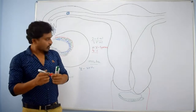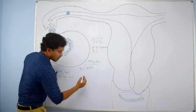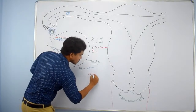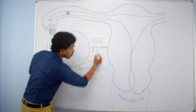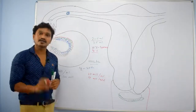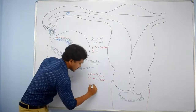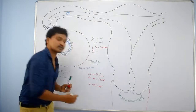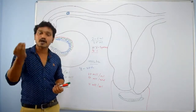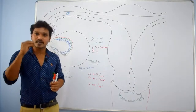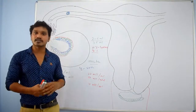If the sperm count is more than 20 million per ml or more than 50 million per total specimen, it is considered normal and fertile. If less than 10 million per ml along with morphologically abnormal sperms, the person is considered sterile and cannot give birth to babies in normal circumstances.